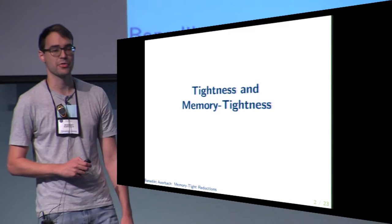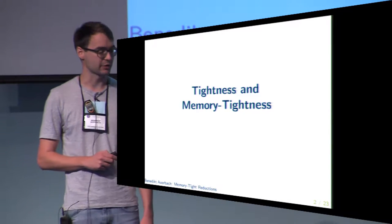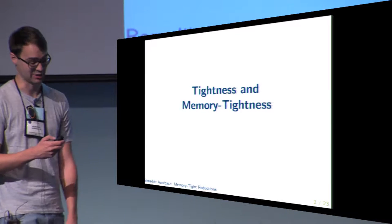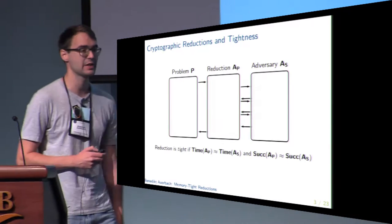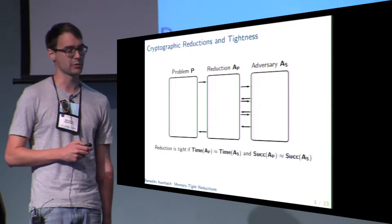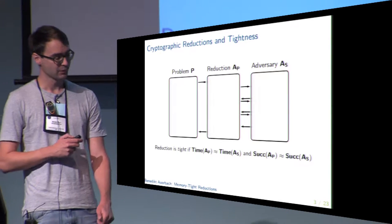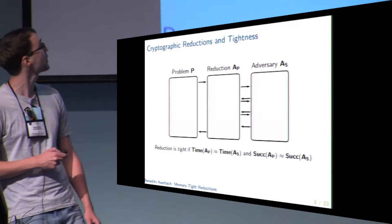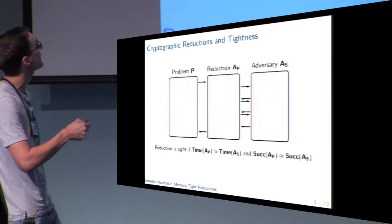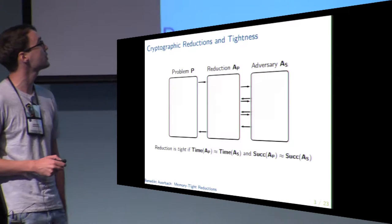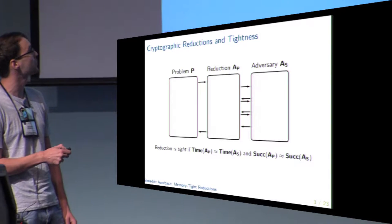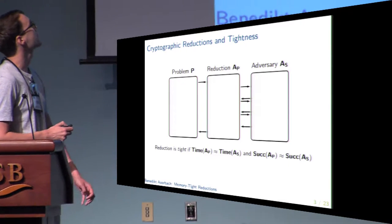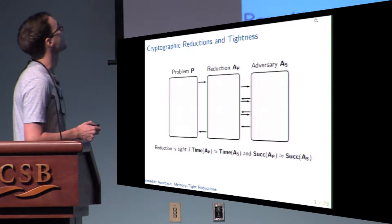Since I'm going to talk about the role of memory in cryptographic reductions, I will start with a short introduction to reductions. Usually when we construct some cryptographic scheme and want to show that it is secure, we rely on cryptographic reductions. Suppose we have some hard problem P. What we do is show that any adversary breaking the security of our scheme can be turned into an algorithm solving instances of our problem.